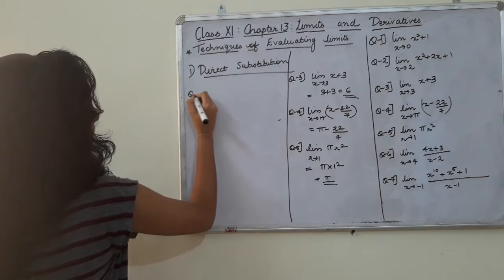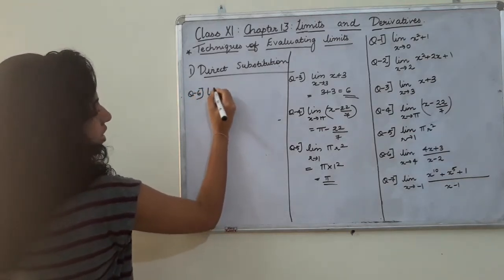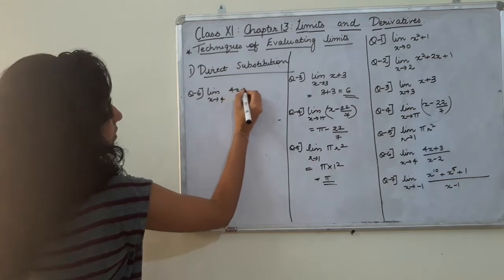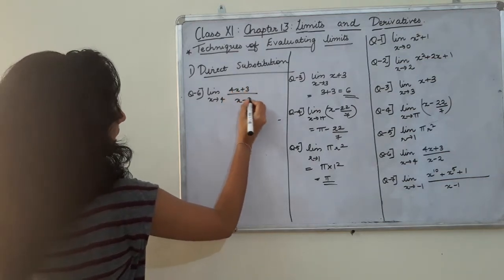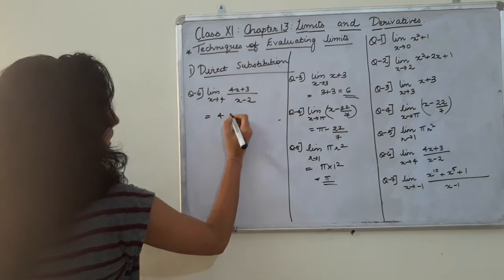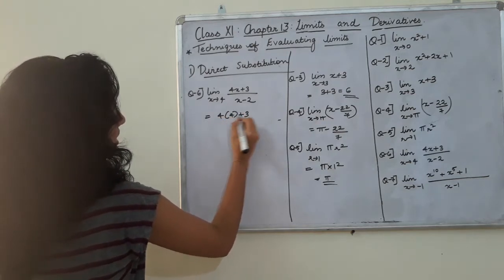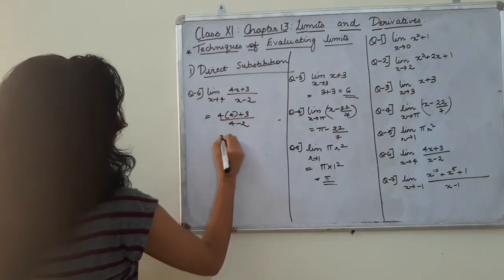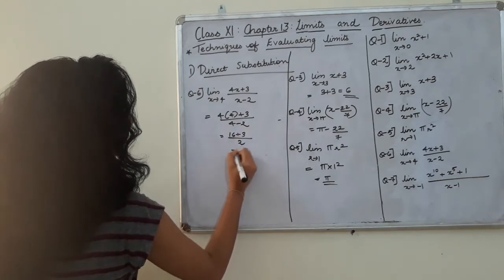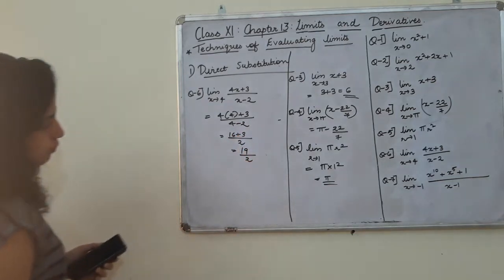Question number 6: limit as x tends to 4 of (4x plus 3) divided by (x minus 2). Substituting x = 4: (4 times 4 plus 3) divided by (4 minus 2) equals (16 plus 3) divided by 2, which equals 19 by 2.